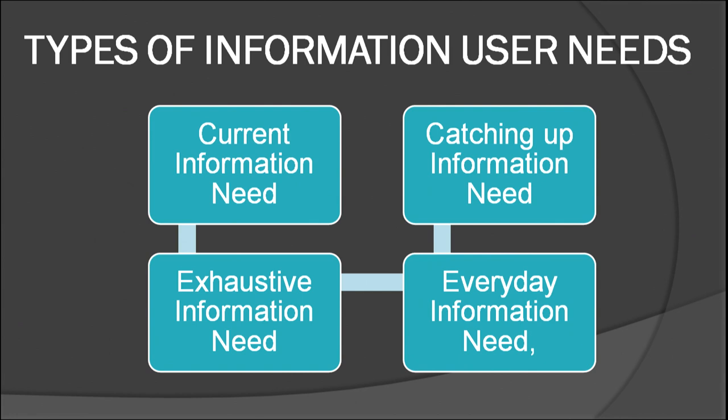Of all user groups, researchers are the most intensive users of library resources and services. They need information to keep up to date, to find new areas of research, to avoid duplication of research, and to solve problems. On the basis of user surveys, we can identify four types of information needs: current information need, exhaustive information need, catching up information need, and everyday information need.